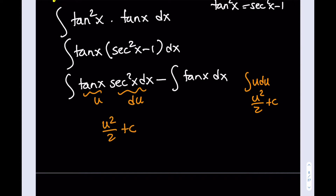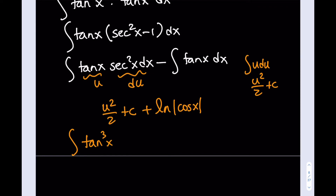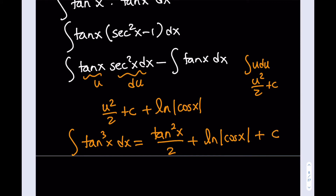The integral of tangent x is negative ln|cos x|. Since we already have a negative sign in front, it becomes plus ln|cos x|. Back-substituting u equals tangent x, the integral of tangent cubed x dx equals tangent squared x over 2 plus ln|cos x| plus c. So with odd powers, we separate one and manipulate using trigonometric identities.